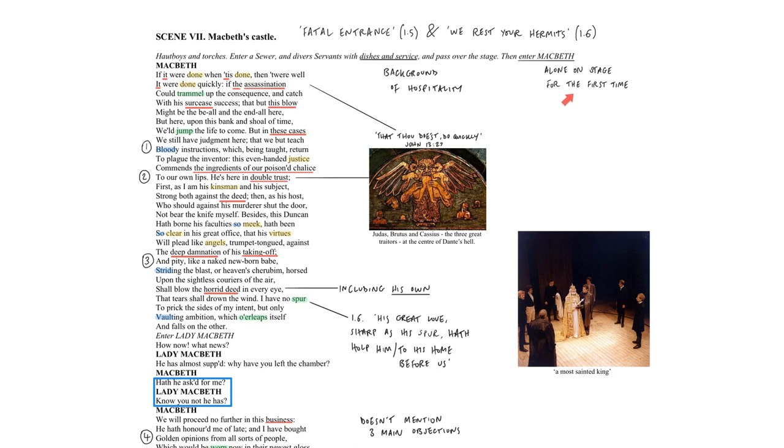Act 1, scene 7 of Macbeth is the first time we see Macbeth alone on stage, the only time he ever addresses the concept of justice, and the only time he ever explicitly considers reasons against killing Duncan. It takes place against the background of hospitality because Macbeth has left the banquet in Duncan's honour to contemplate whether or not he should kill him.